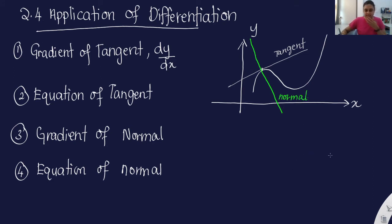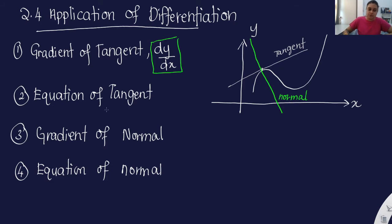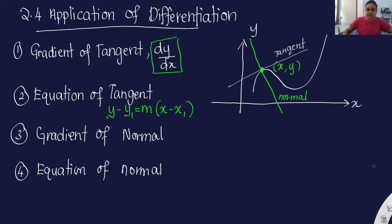When you want to find the gradient of the tangent, you find your dy/dx — you do differentiation. If you want to find the equation of the tangent, you apply y minus y1 equals m times x minus x1, where m is the gradient. The y1 and x1 come from the given point, so usually you will be given the point x and y.